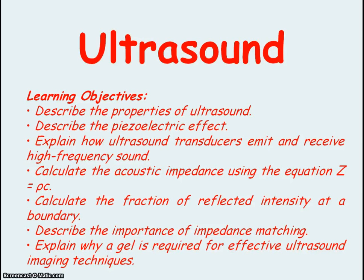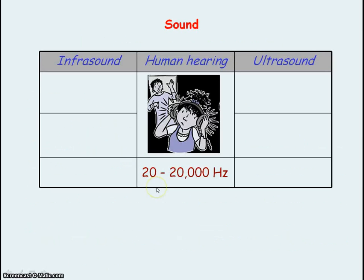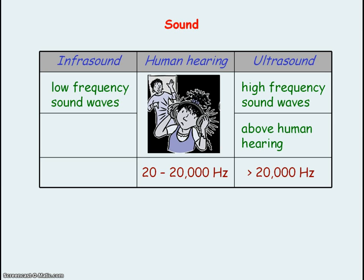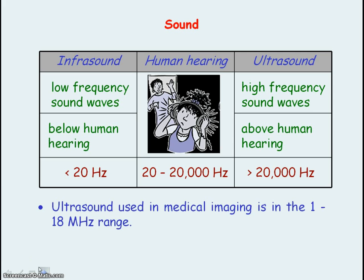We're going to be looking at ultrasound. Human hearing range is somewhere between 20 Hz to 20,000 Hz, and ultrasound is high frequency sound waves that are above human hearing, so they have a frequency above 20,000 Hz. Infrasound is low frequency sound waves below human hearing, with frequencies below 20 Hz. The ultrasound used in medical imaging is in the 1 to 18 MHz range.